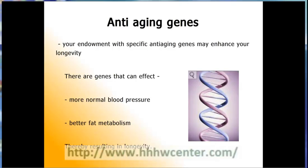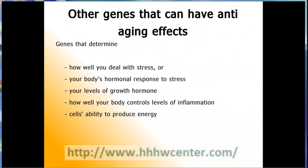If you have not reached that time of your life yet, your mother's age at menopause will give you a reasonable estimate of your expected menopause and probable genetic age. In actuality, your genetic age is neither a direct determination by your mother and father nor the direct result of the gene mixture they gave you. Rather, your endowment with specific anti-aging genes may enhance your longevity. For instance, certain genes associated with more normal blood pressure give you a better chance of living longer. Similarly, certain genes associated with better fat metabolism will cause you to age more slowly, while other genetic characteristics that cause the body to deal with fat less effectively may be associated with increased heart attacks and a greater risk of Alzheimer's disease.